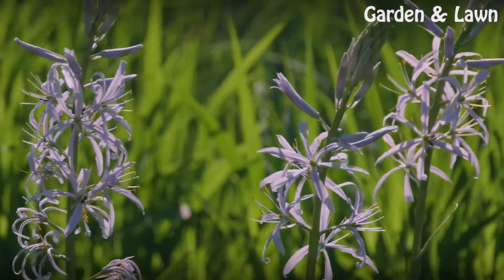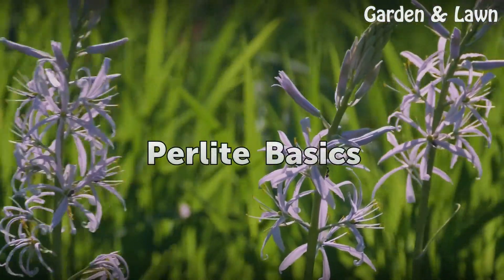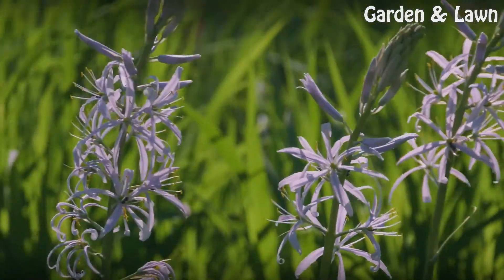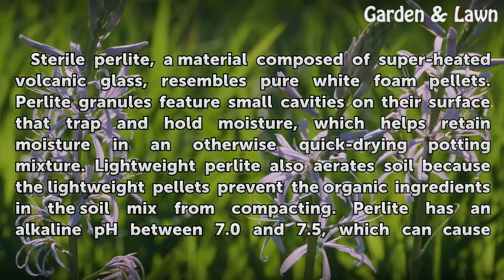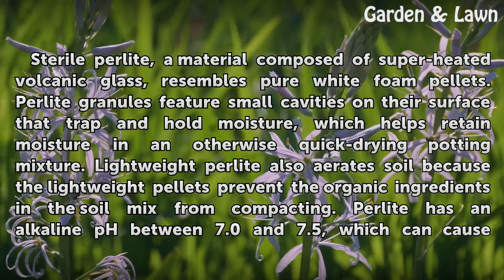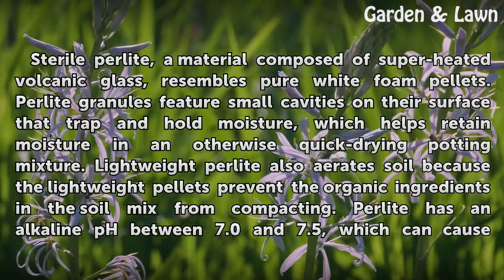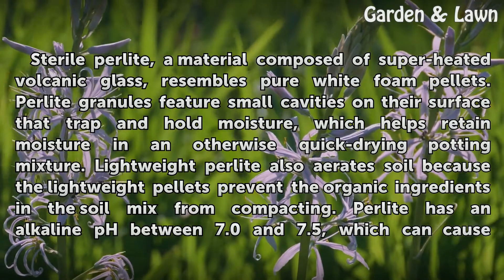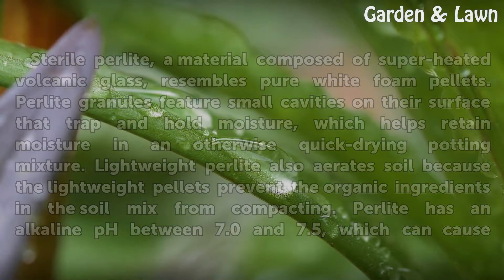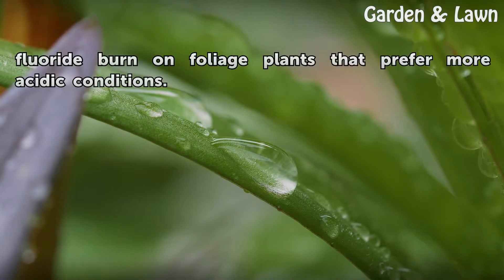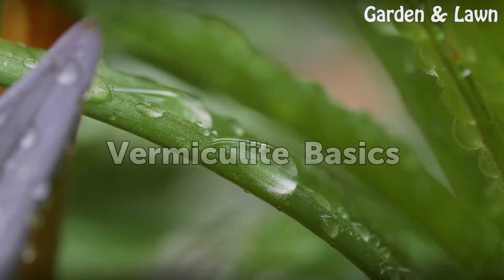Perlite basics: sterile perlite, a material composed of superheated volcanic glass, resembles pure white foam pellets. Perlite granules feature small cavities on their surface that trap and hold moisture, which helps retain moisture in an otherwise quick-drying potting mixture. Lightweight perlite also aerates soil because the lightweight pellets prevent the organic ingredients in the soil mix from compacting. Perlite has an alkaline pH between 7.0 and 7.5, which can cause fluoride burn on foliage plants that prefer more acidic conditions.